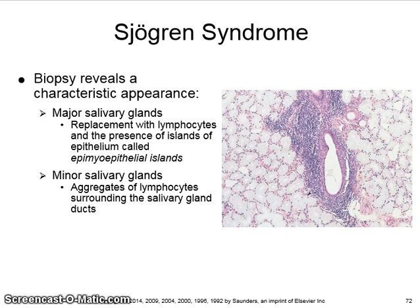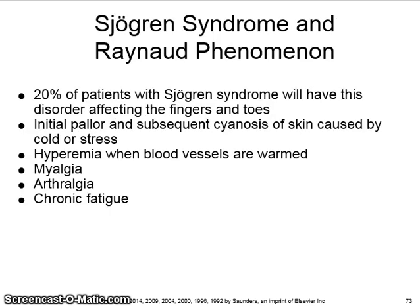A biopsy of a patient with Sjogren's syndrome reveals the characteristic appearance of major salivary glands replaced with lymphocytes and the presence of islands of epithelium called epimyoepithelial islands. Minor salivary glands show aggregates of lymphocytes surrounding the salivary gland ducts.